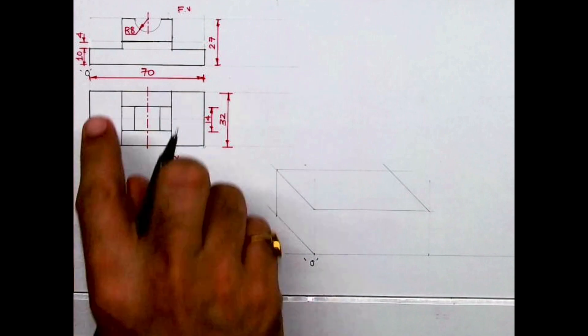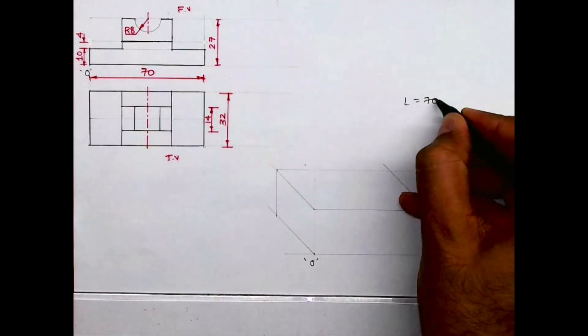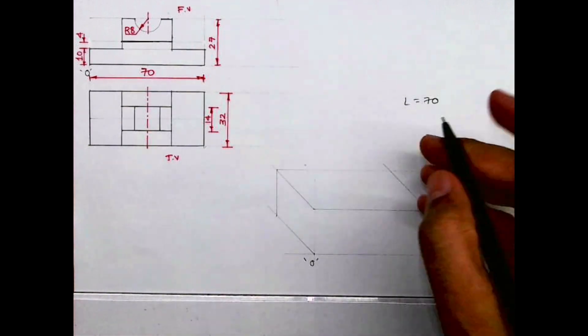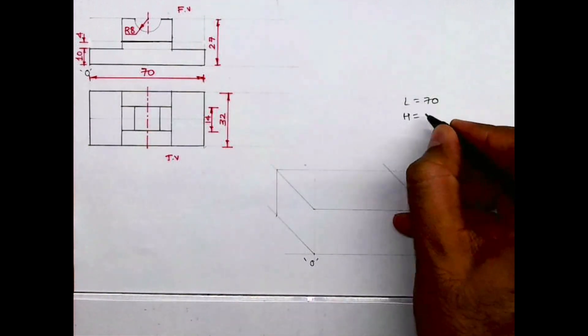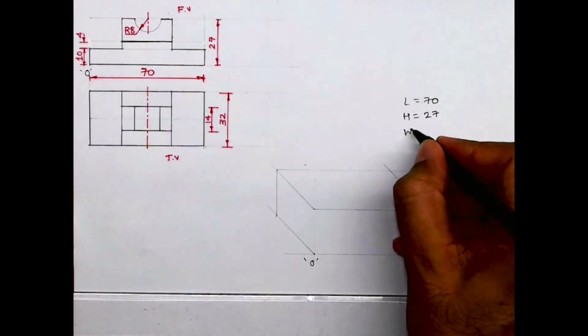Welcome to technical drawing. Today we'll see this sum in oblique. Now if you see, length is 70, height is 27, and width is 32.